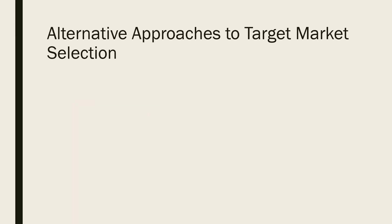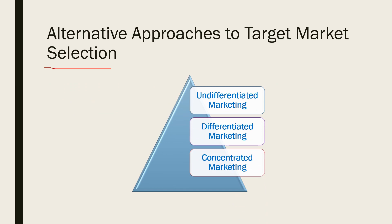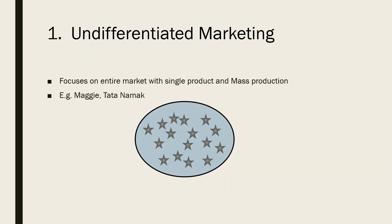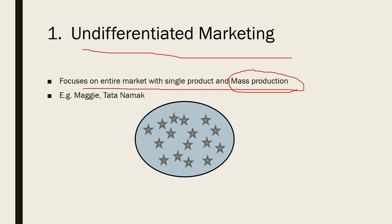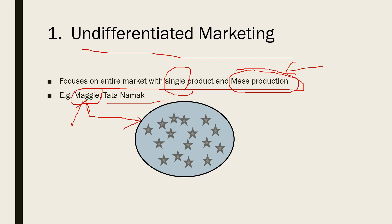The next topic is alternative approaches to target market selection. First is undifferentiated marketing — it focuses on the entire market with a single product and mass production. For the whole market, only a single product is produced. For example, Maggi in its early days was a single product sold in the whole market, and Tata Namak is one product sold in the whole market.